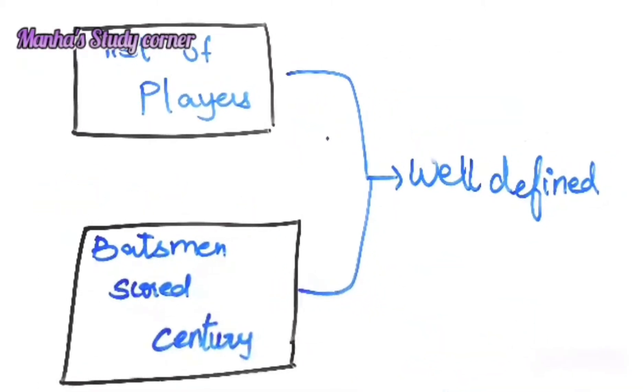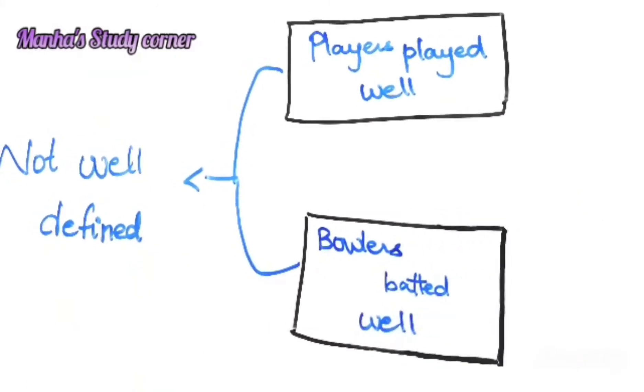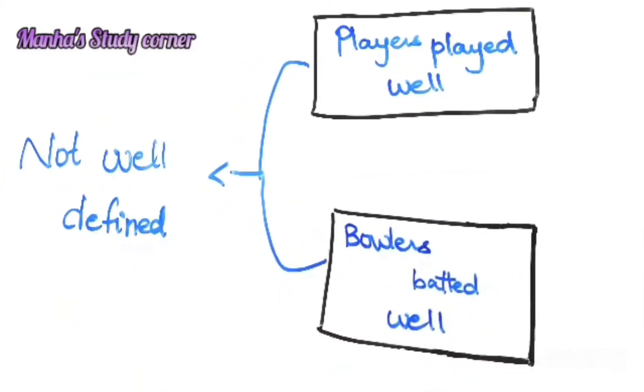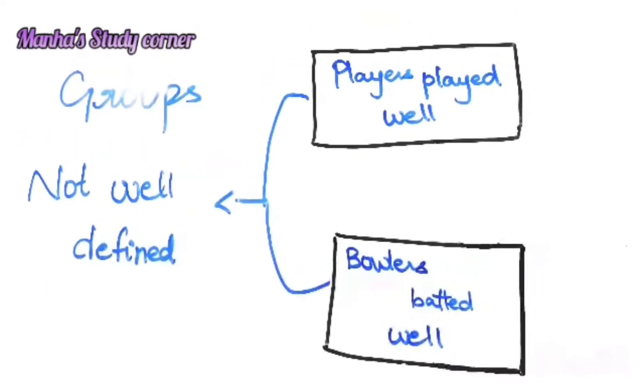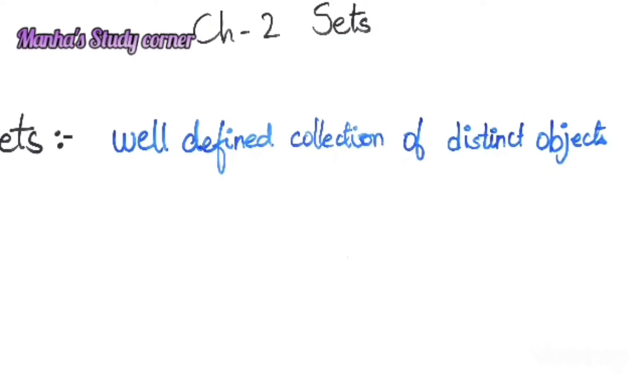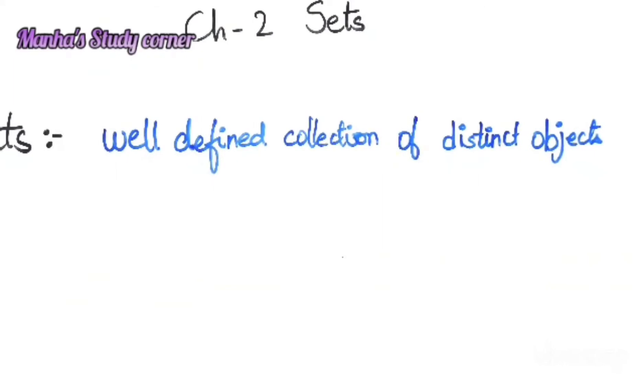The group that is well defined, we can call it as sets. The group that is not well defined, we can simply call it as groups. They are not really sets. So what we have seen is, sets are well defined collection of distinct objects. In other words, a well defined group.